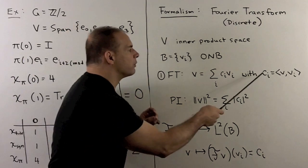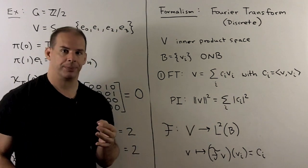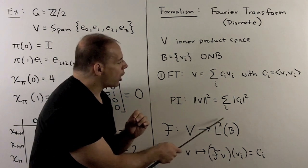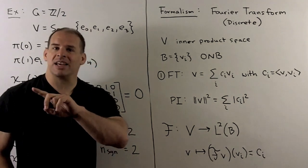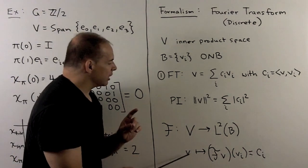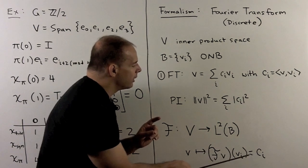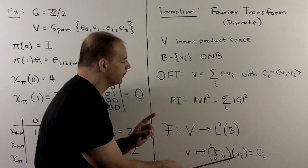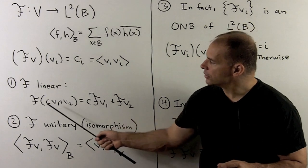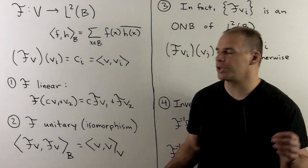For a Fourier transform, we take these coefficients and put them together as a function. The idea: we have a map F from our vector space V to the space of functions on our basis B, where we consider the basis as a set of points. Each vector gives us a function: if we put any basis vector in, it peels off the corresponding coefficient. F is linear — it factors through linear combinations — so to compute with F, it's enough to do so on a basis for V.